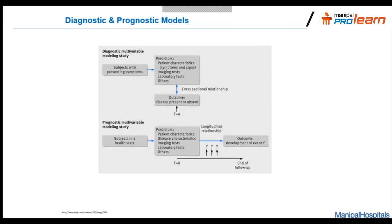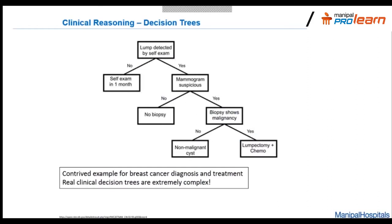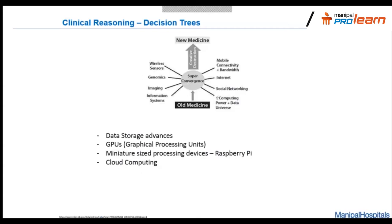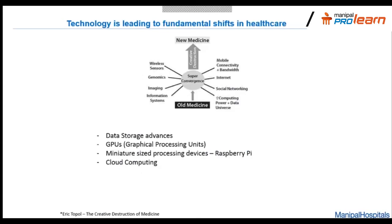Another thing you see a lot in data science is decision trees, and it's no surprise that doctors also use them. For example, a simple decision tree can show how a doctor would diagnose a breast cancer patient and decide on treatment. We've talked about how statistics is very widely used in healthcare.